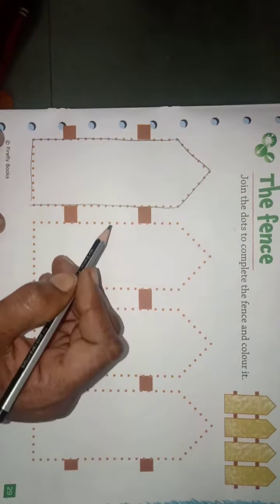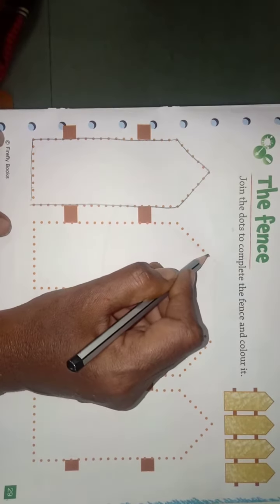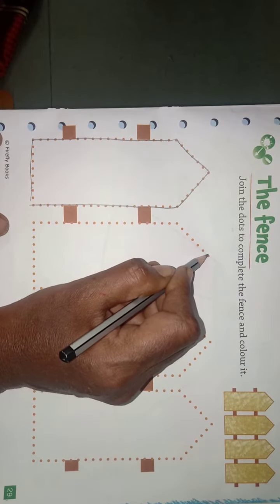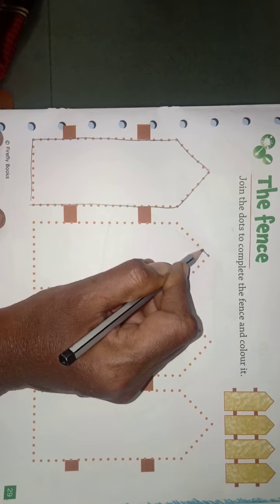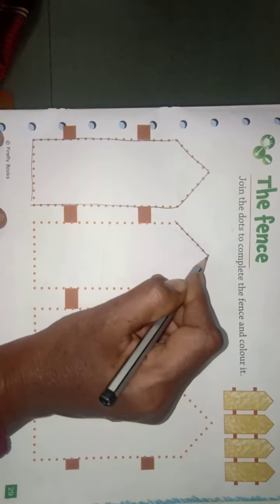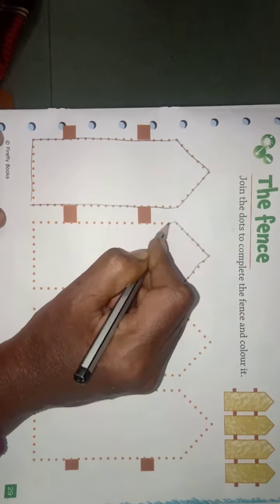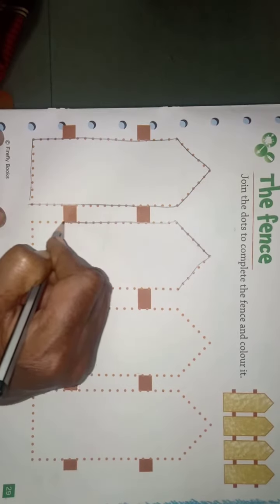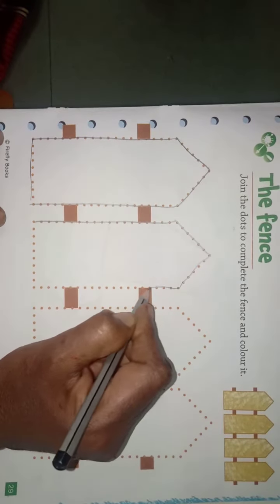So you have to trace this pattern. You have to draw a right slanting, left slanting, standing line, again standing line.